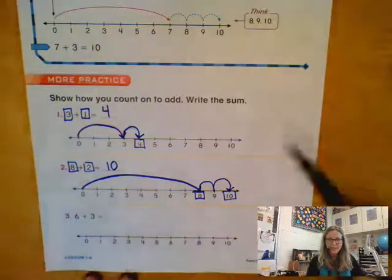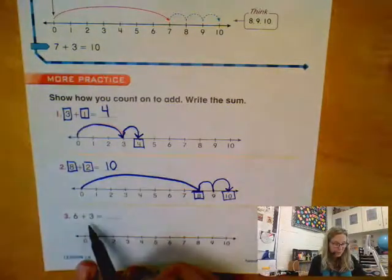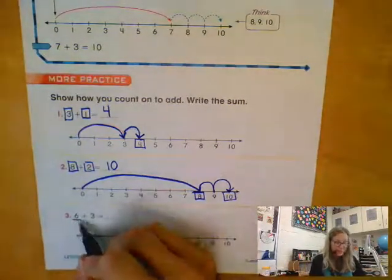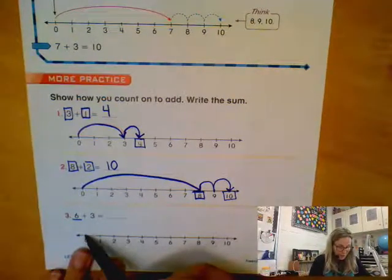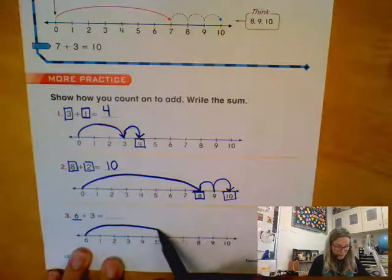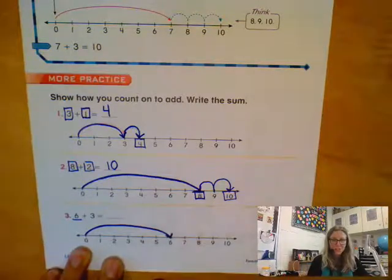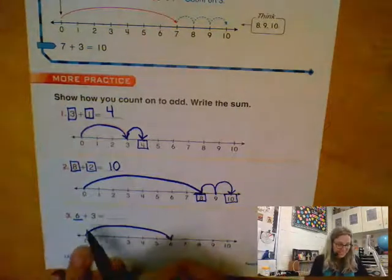All right, moving on to number three, our bigger number is the six. So we will start with the six. So from zero, we're going to jump all the way to six. That first jump, we do one giant jump. The second number, those are our froggy hops, our ribbit ribbit ribbit.